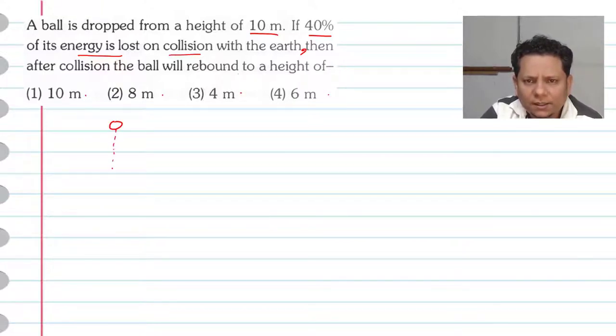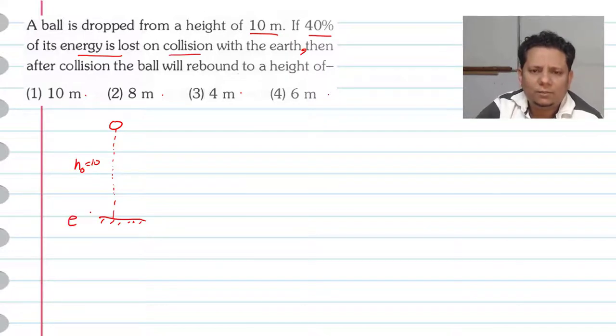The scenario is that a ball is dropped from height H, which is 10 meters, and it hits the horizontal ground. At the point of collision,